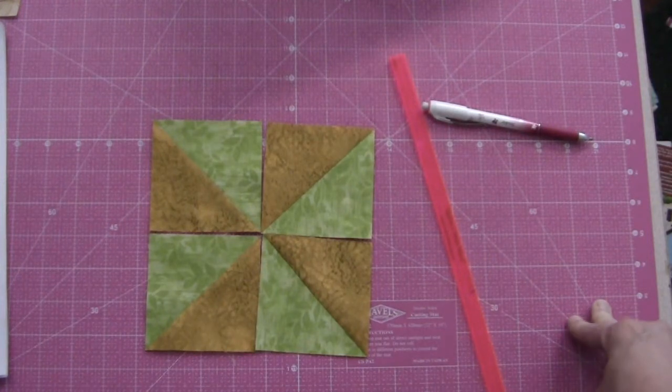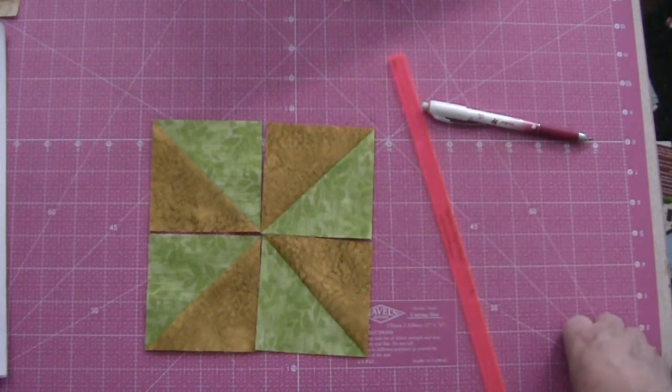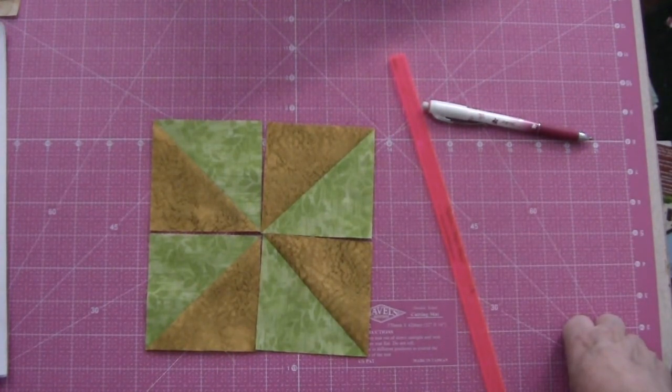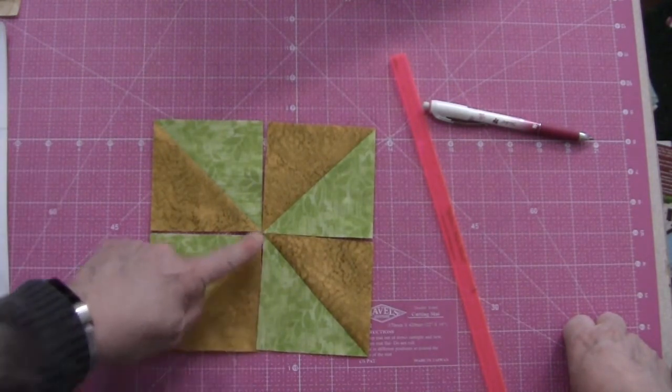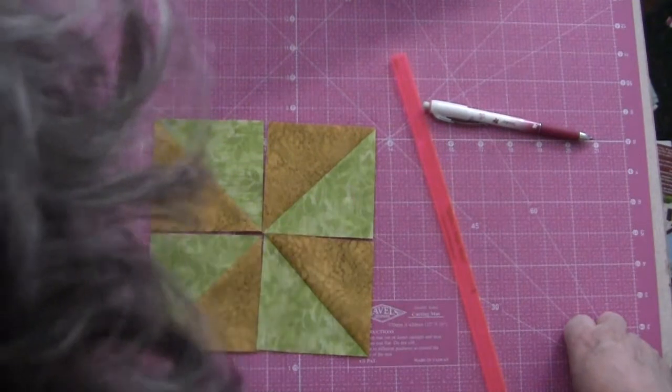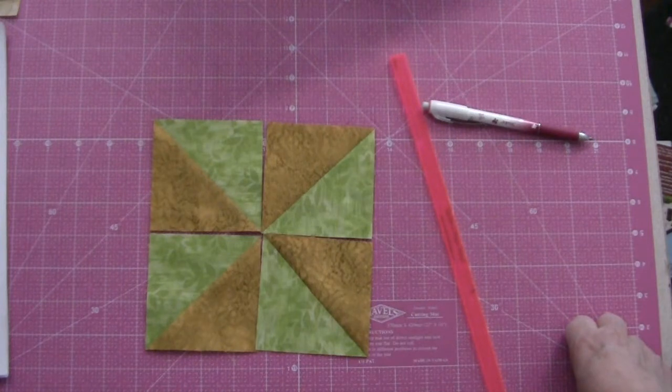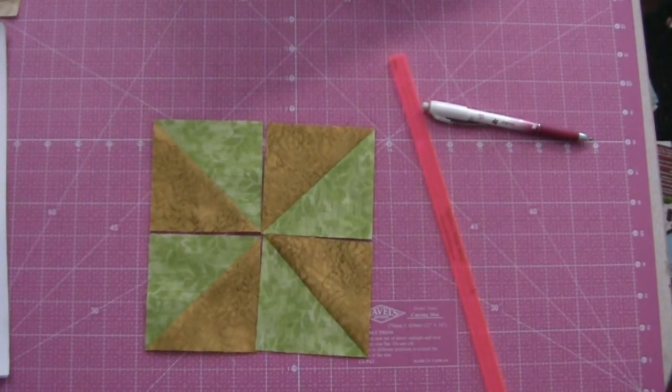And I'm going to just press the seams open as I sew these together just to make sure we don't have any issues with where the flying geese are going to connect at these seam intersections. So let me go do that. I'll come back. I'll show you what the back of my center of my star puzzle block looks like and we'll lay out the rest of it and see how it goes.